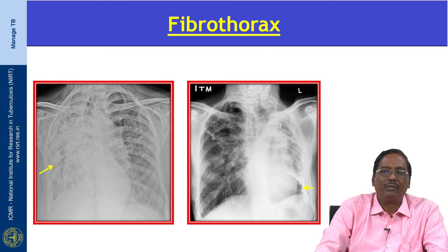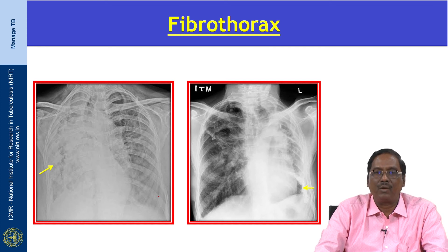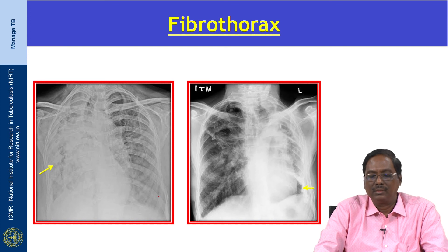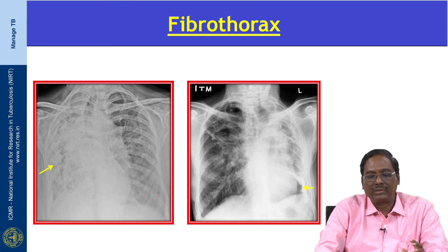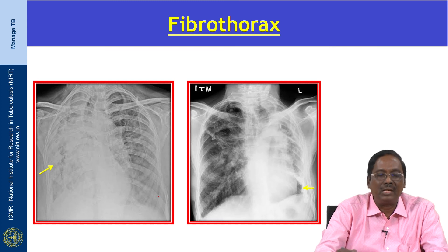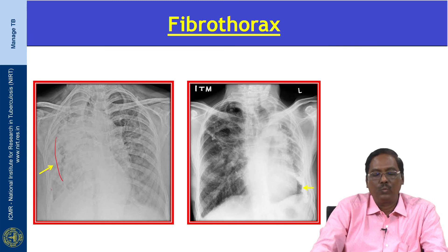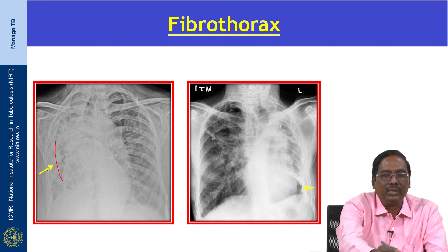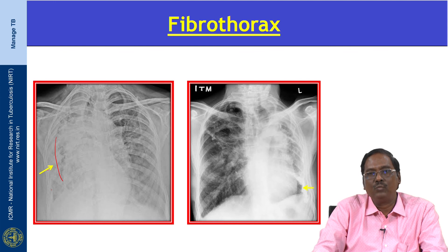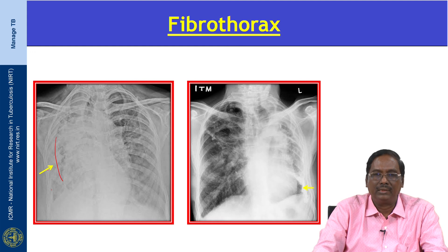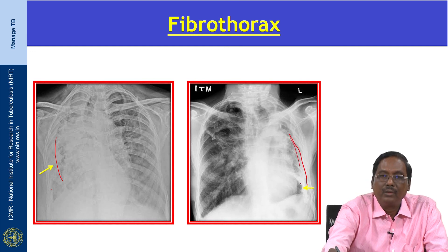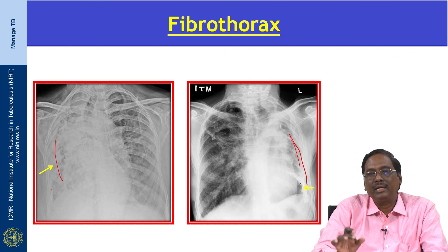This x-ray shows fibrothorax, the most severe form of pleural fibrosis. There is extensive damage to the visceral pleura — it is completely thickened, with fusion of both visceral and parietal pleura, obliterating the pleural space. The mediastinum is shifted to the same side, with marked volume loss on the affected hemithorax and reduced lung mobility.